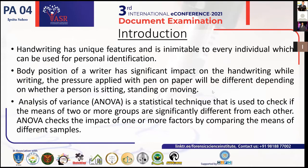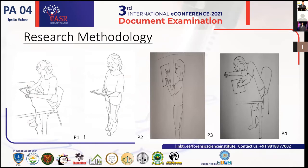Body position of a writer has a significant impact on handwriting. While writing, the pressure applied with pen on paper will be different depending on whether a person is sitting, standing, or moving. I have used a software for statistical analysis — ANOVA, analysis of variance — which is a statistical technique used to check if the means of two or more groups are significantly different from each other, by comparing the means of different samples.